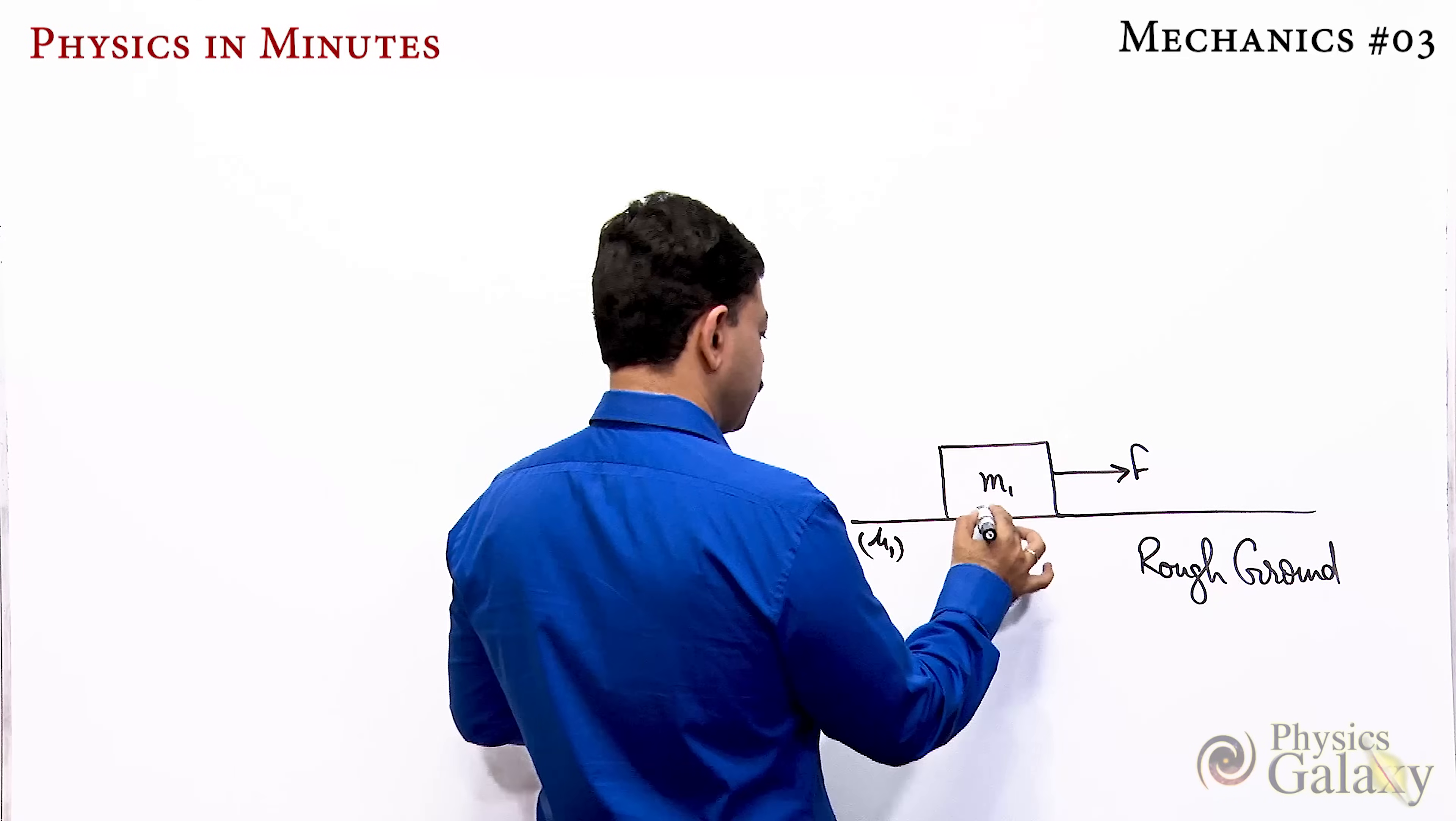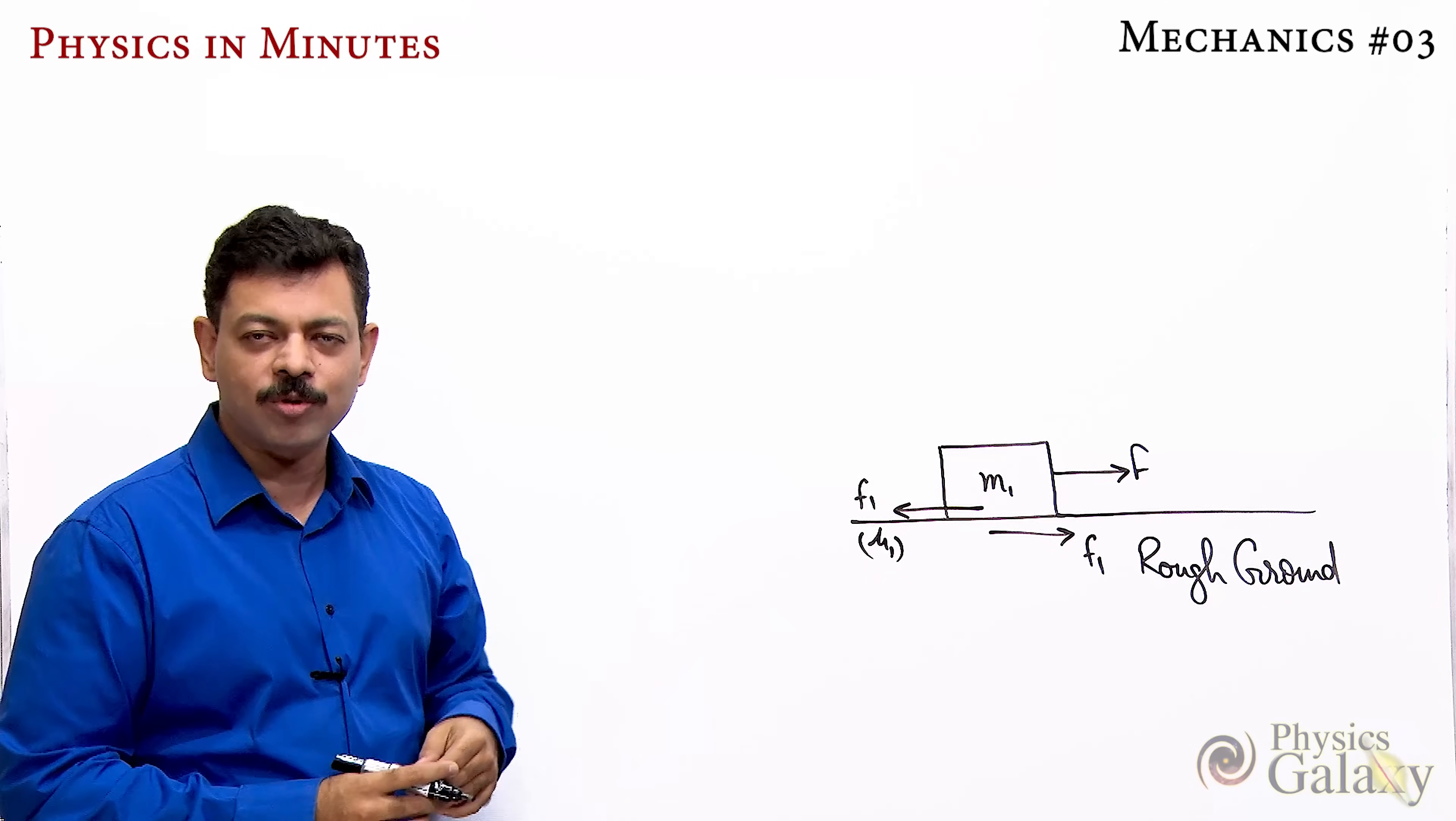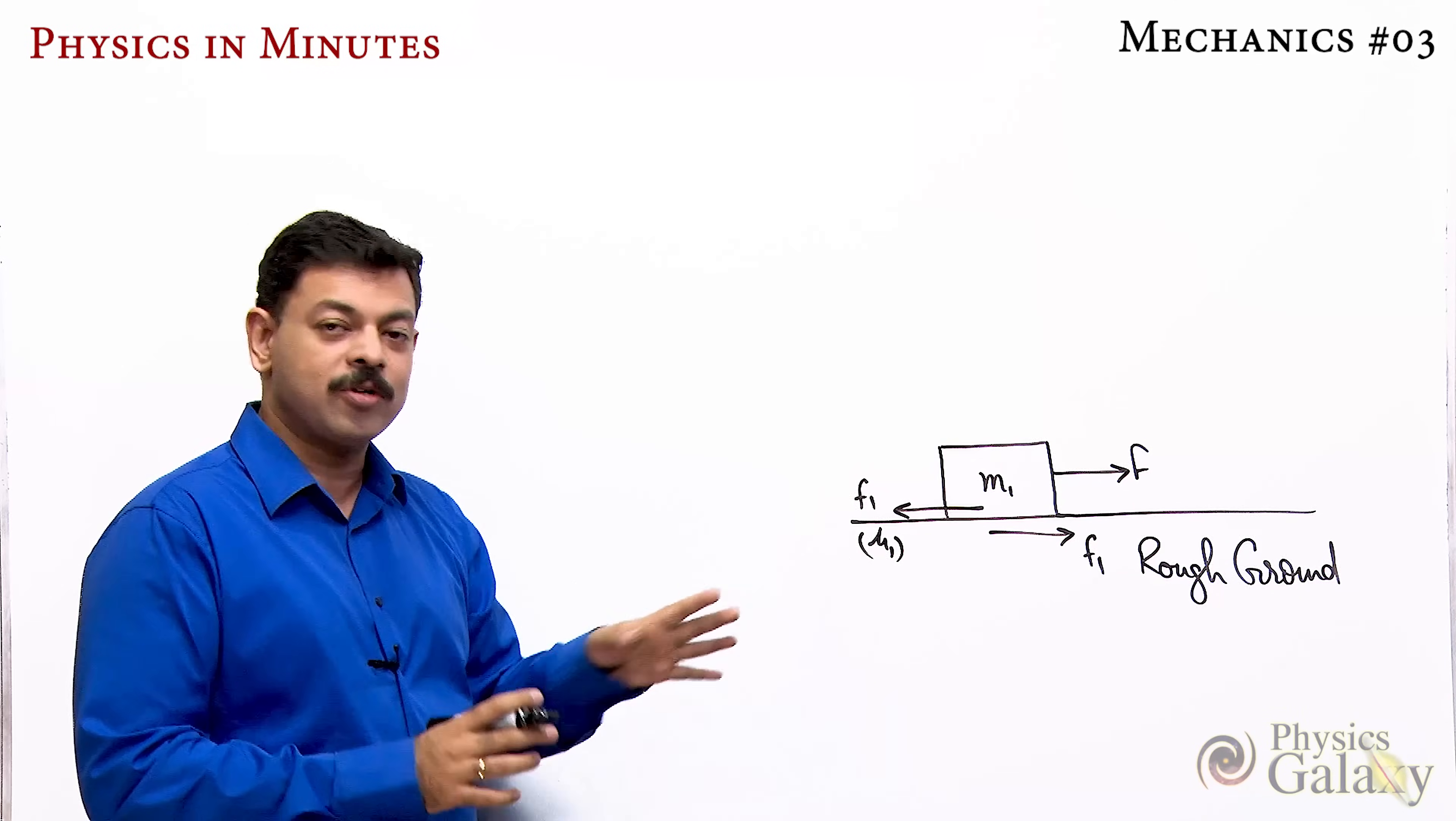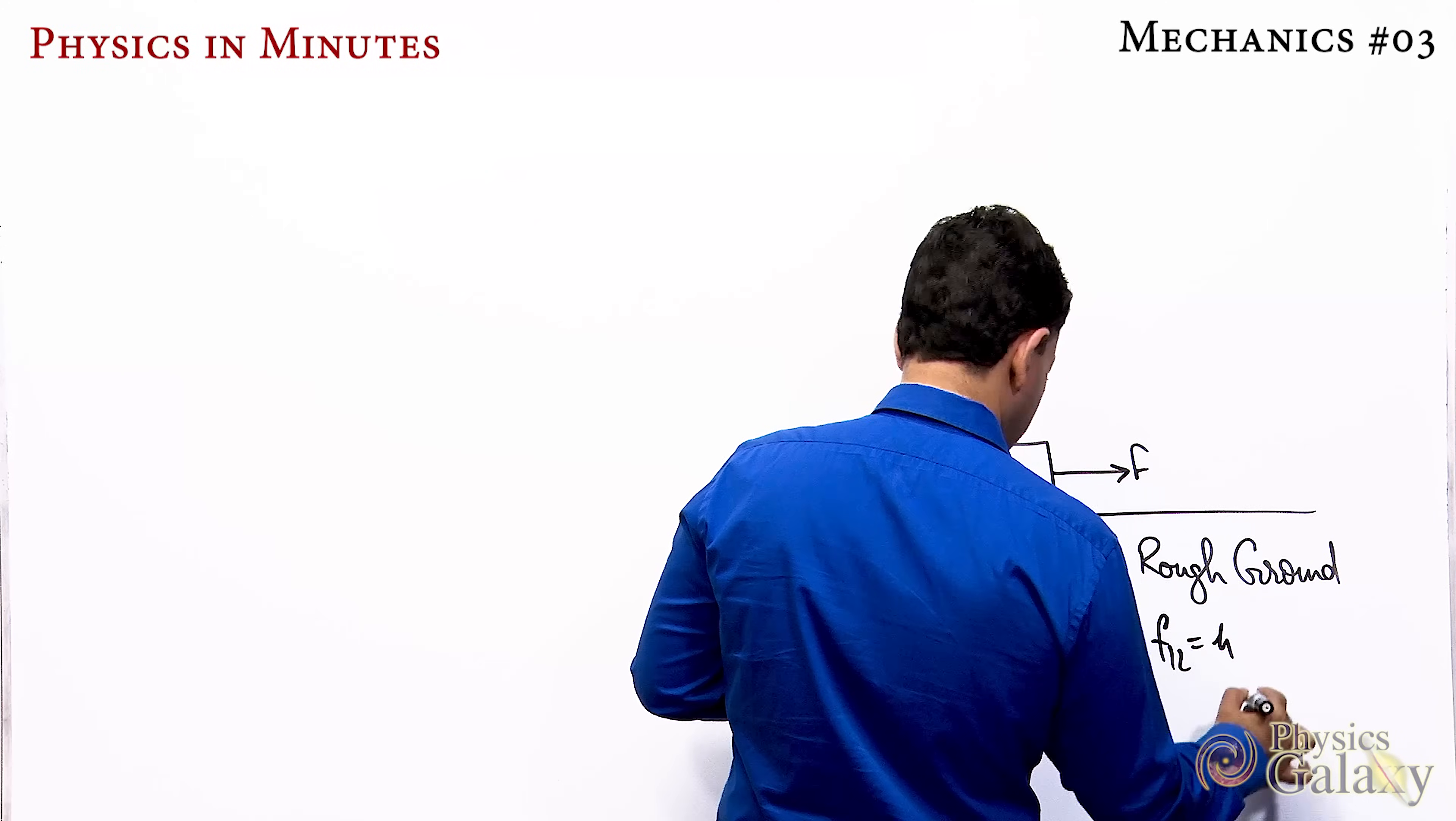You know well when force is applied, friction starts acting. f1 friction always acts in pairs, opposes relative motion. As you increase force, friction increases and the block doesn't move until the external force crosses the limiting value of friction.